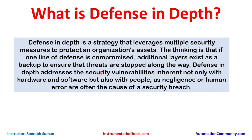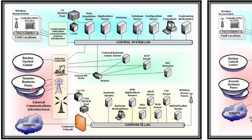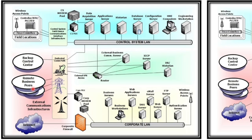By layering and even duplicating security processes, the likelihood of a breach is minimized. Looking at an example network, we can see controllers, RTUs, and field devices communicating with a SCADA control system. Modems, data systems, application servers, historians, database servers, HMI computers, and engineering workstations are part of the control system LAN. There are routers extending communication to external business, a backup control system, remote business peers such as power grid companies, and VPN access to a third-party center.